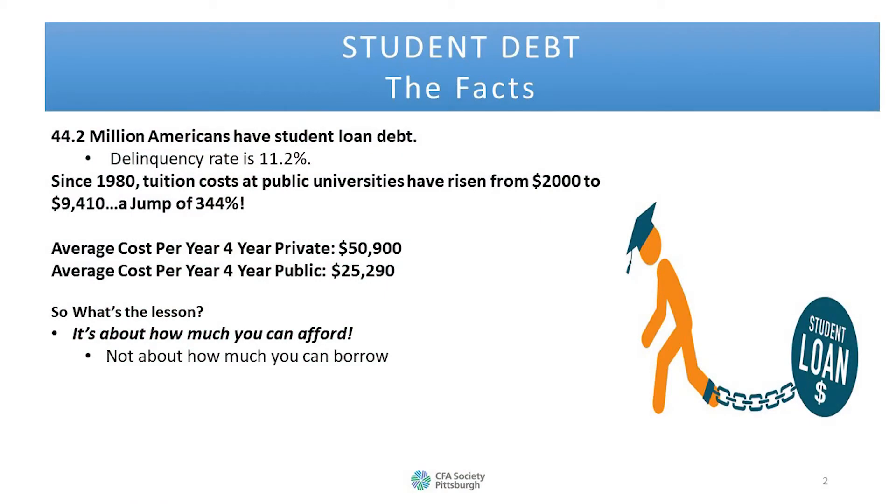Hi, my name is Joshua Kirkpatrick and today I'll be speaking about student loans. Let's look at some facts: over 44 million Americans have student loan debt with an 11% delinquency rate. Since 1980, tuition costs have risen over 344 percent. Currently, the average cost per year of a public university is a little over $25,000. So you may ask yourself, what's the lesson? It's about borrowing how much you can afford, not borrowing as much as possible.